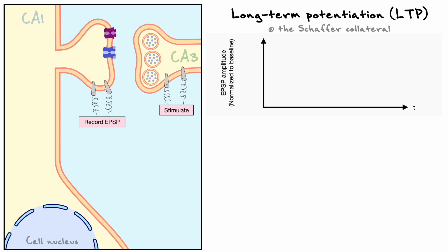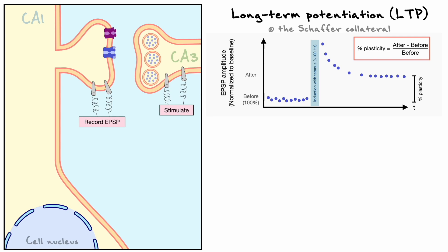When electrical stimulations are done at a low frequency — let's say once or twice per minute — the amount of depolarization recorded on the postsynaptic cell is constant and passive. The EPSP axis is normalized to the baseline, which corresponds to this first period when the cell is stimulated at low frequencies, so the first responses we see are at 100%. When one induces a very high frequency train of electrical stimulation — also known as a tetanus — it causes the postsynaptic cell to fire. After the tetanus period, the size of the postsynaptic response is bigger than during baseline, and it remains elevated a long time after the tetanus. We can compute the percent amount of plasticity caused by the tetanus using this equation.